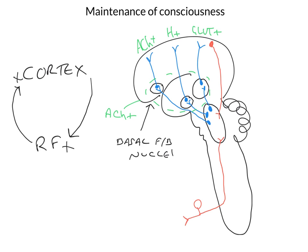What we've drawn here is actually clinically quite important. For example, certain antihistamines are known to induce drowsiness, because if you antagonise histamine at the level of the cortex, you take away one of these excitatory inputs coming up from the hypothalamus. Therefore, you make this positive feedback loop turn around a bit more slowly, and you get a bit drowsy, a bit less wakeful. Likewise, some cholinergic agents have drowsiness as a side effect, for the same reason.